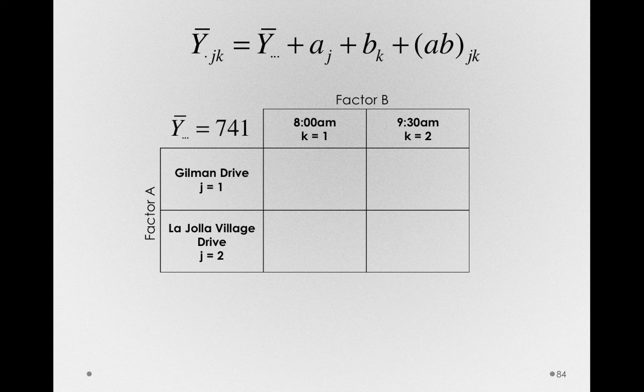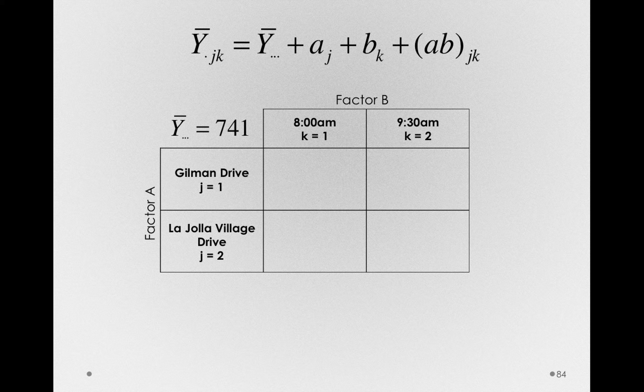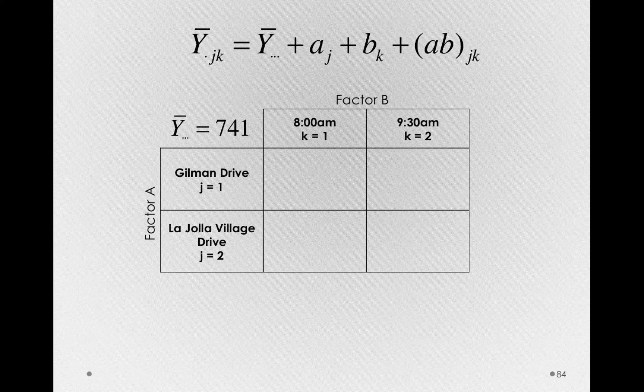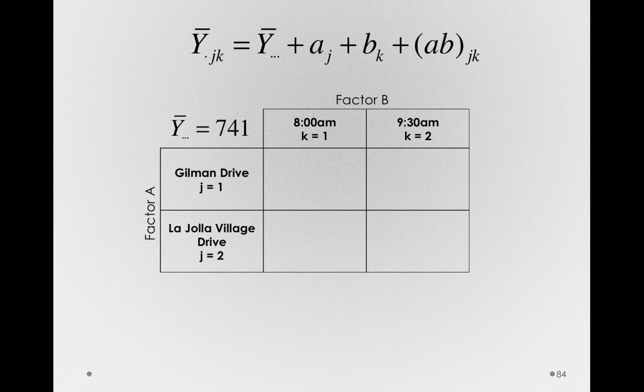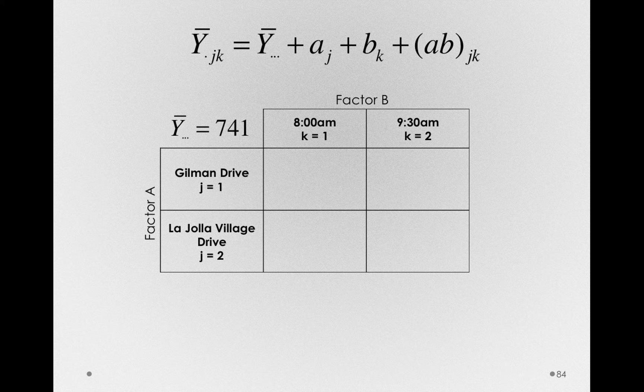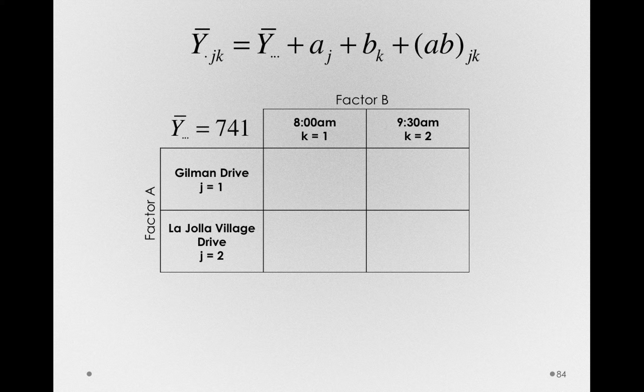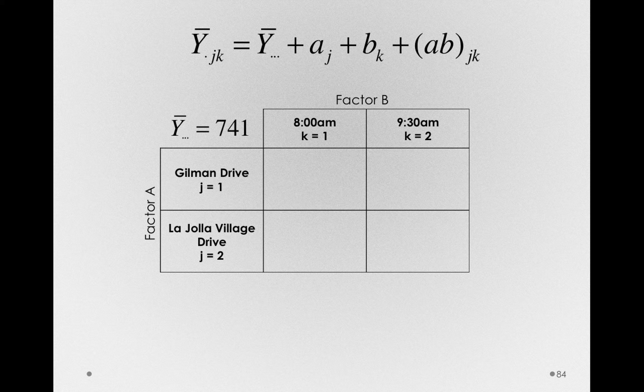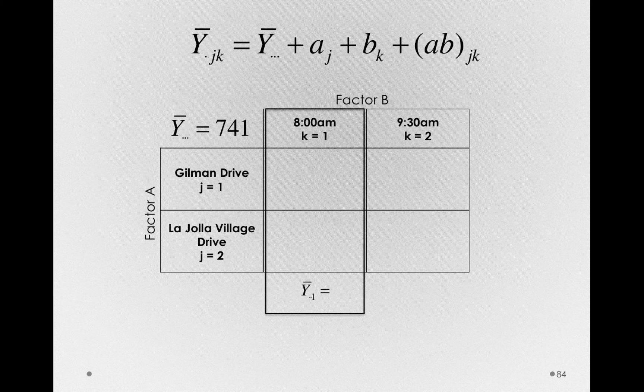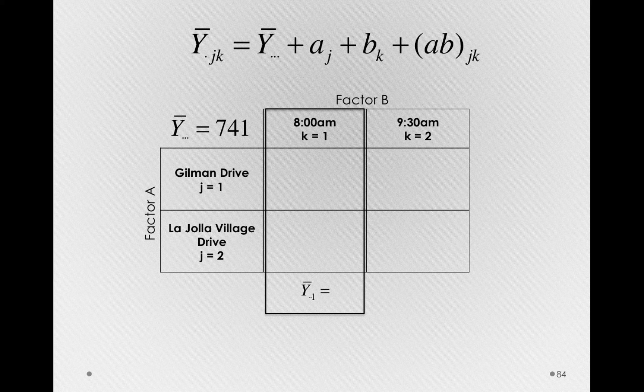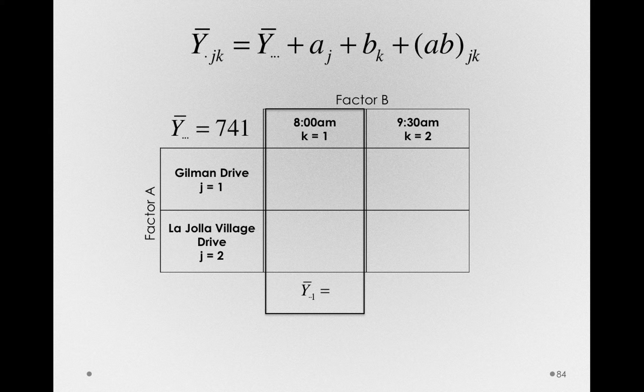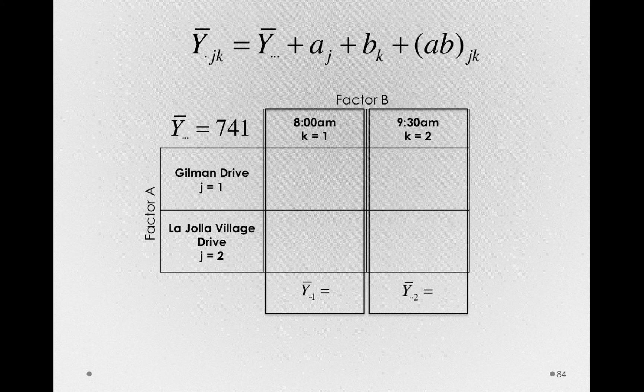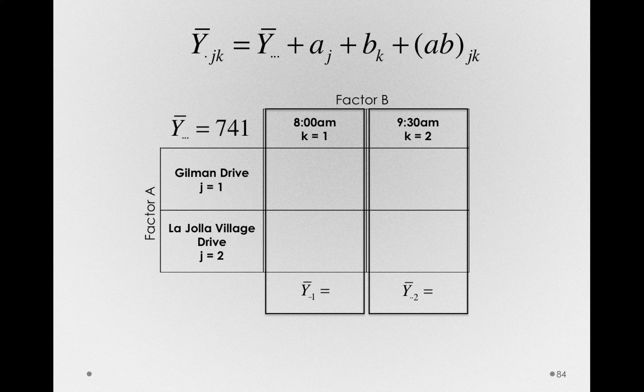Next, let's find the offsets associated with factor B, that is, the B sub 1 and B sub 2. To find these, we're going to have to find the overall mean at 8 a.m. and the overall mean at 9:30 a.m., because the offsets for B will relate to how those means differ from the grand mean of 741. So what we're looking for is the marginal mean at 8 a.m., Y bar dot dot 1, and the marginal mean at 9:30 a.m., Y bar dot dot 2.